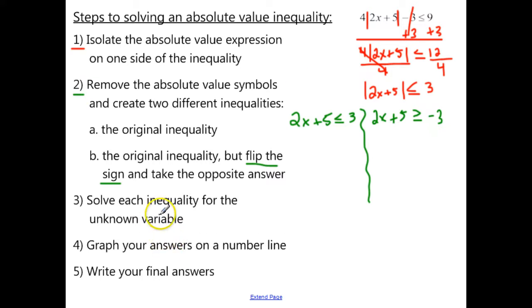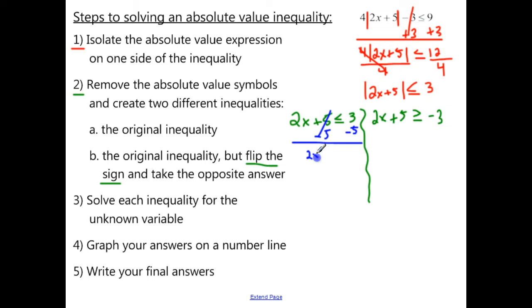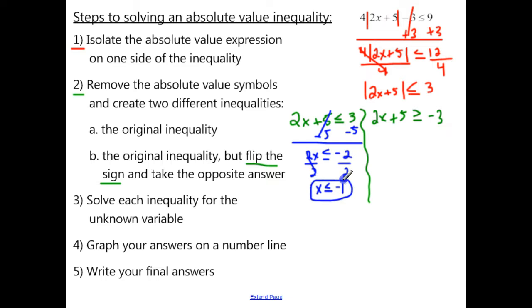Step 3: solve each inequality for the unknown variable. For the first inequality, subtract 5 from both sides, giving us 2x less than or equal to negative 2. Then divide by 2 to isolate the variable, and we get x less than or equal to negative 1.